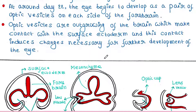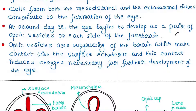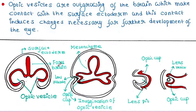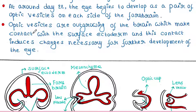Now at around day 22, the eye begins to develop as a pair of optic vesicles on each side of the forebrain. Here is the forebrain, and here are the two optic vesicles — one on each side. These optic vesicles will form the eye later. Optic vesicles are outgrowths of the brain which make contact with the surface ectoderm, and this contact induces changes necessary for further development of the eye.